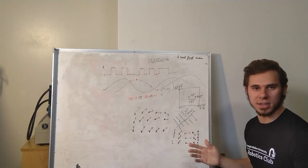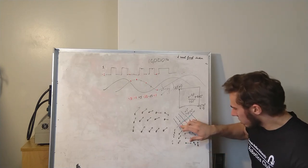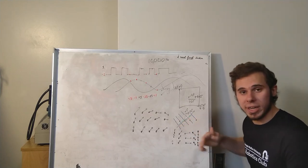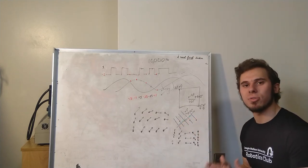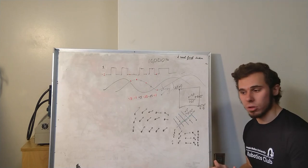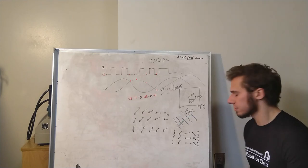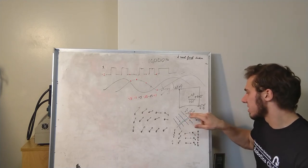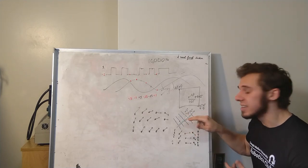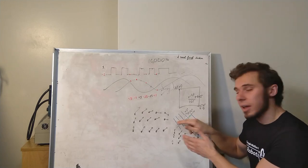So we want to compute the length of those green lines, because that's going to tell us how far the wave had to travel, which is going to tell us how long it takes the wave to get from a microphone to the center of the array.